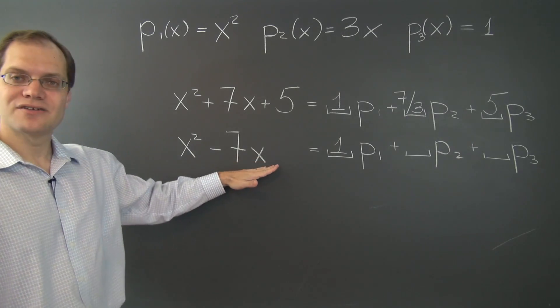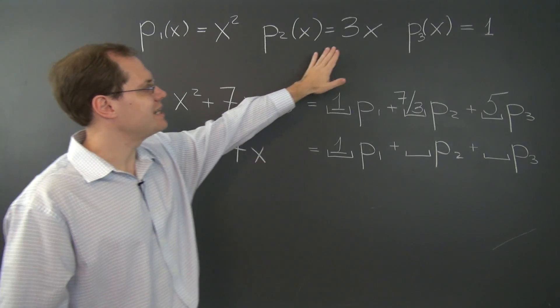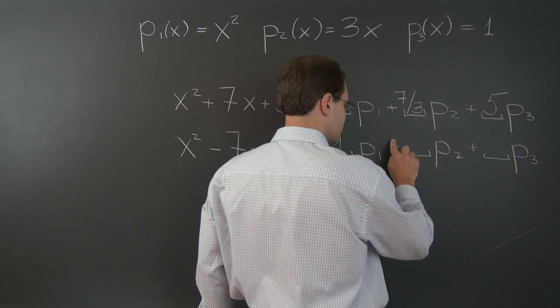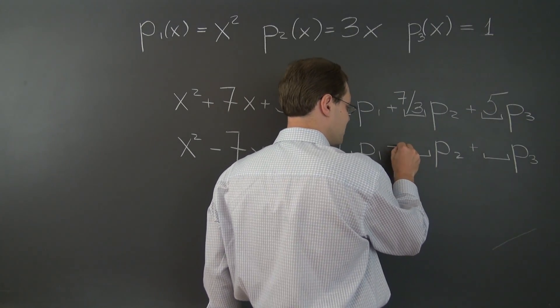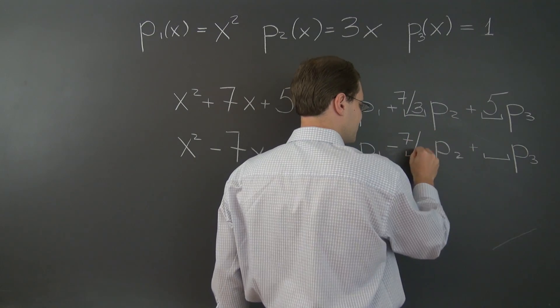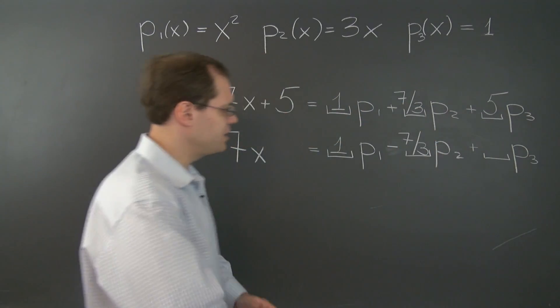To match the x term, we need to take negative 7 thirds of p2. So maybe I'll replace this plus with a minus, negative 7 thirds. I need a way to do it.